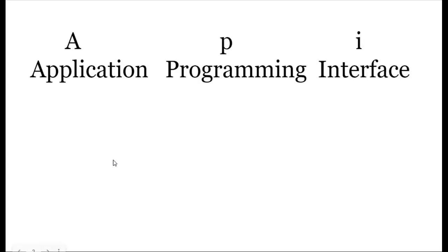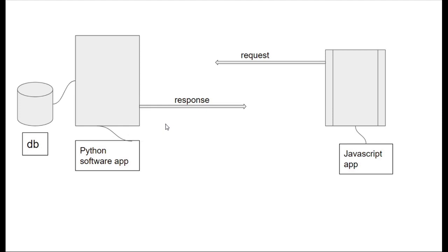An API stands for Application Programming Interface. It's simply a way for two separate software applications to communicate with each other. We can have two separate applications built in different languages or frameworks — for example, one built with Python and another with any other programming language. An API provides the functionality for these separate applications to share their data or communicate with one another.